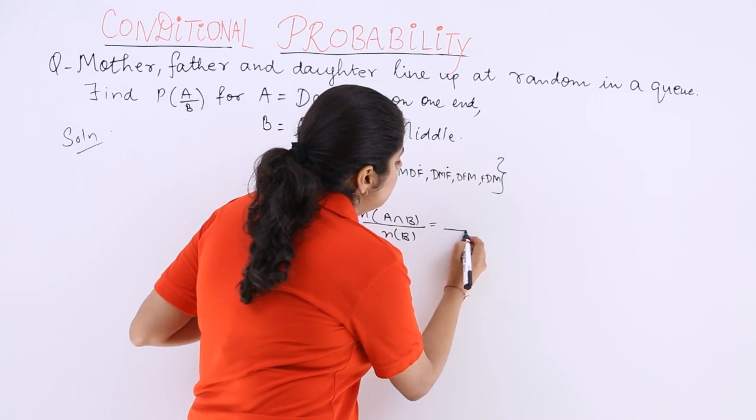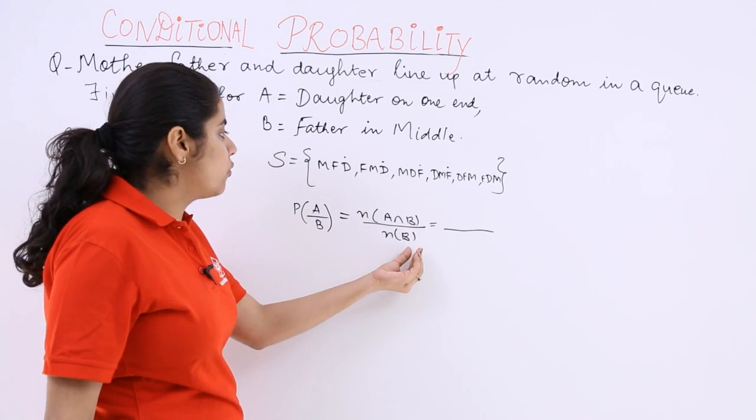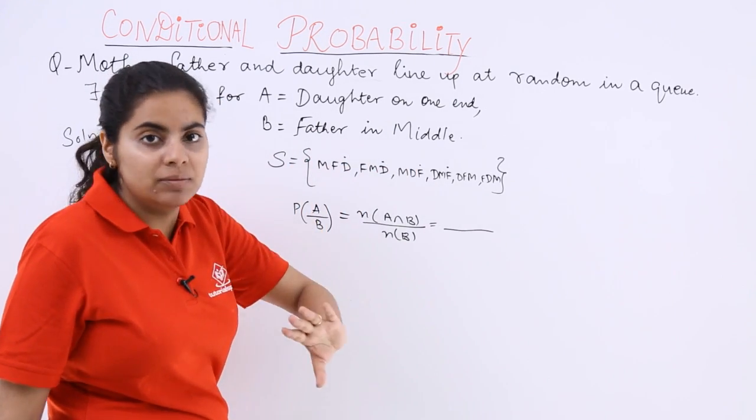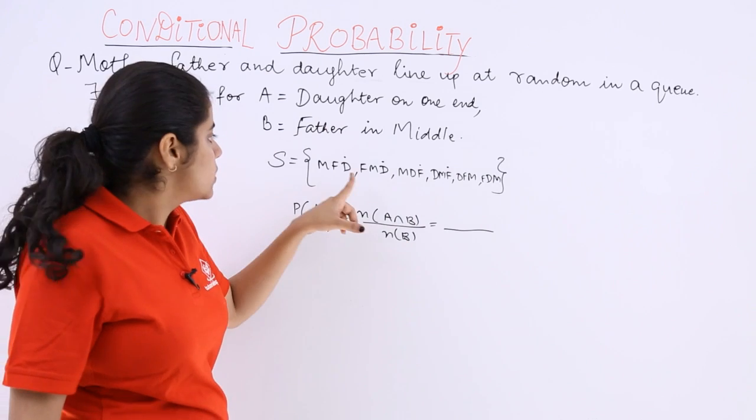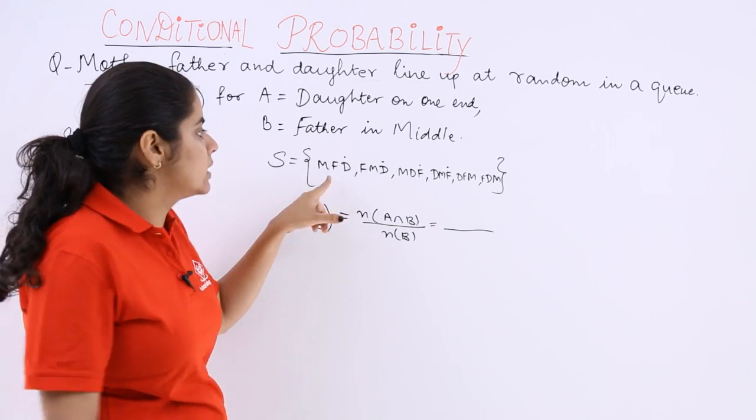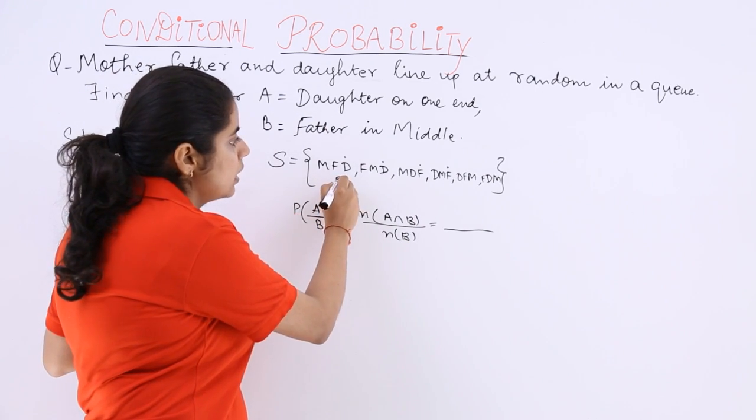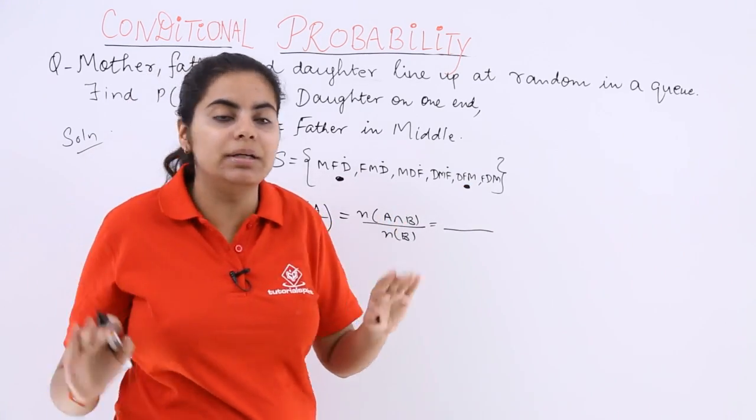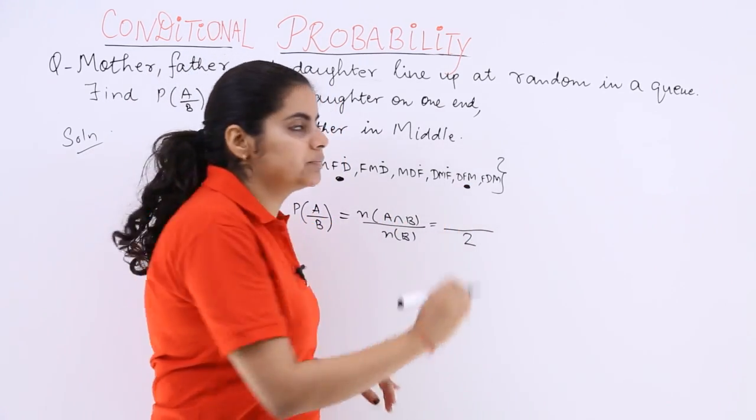Now B event is what? Let's sort out the denominator first. N(B) means the number of cases in which the father is in the middle. So father is in the middle in the first case here and this case. No other case is the father in the middle. So 2 cases. Clear?